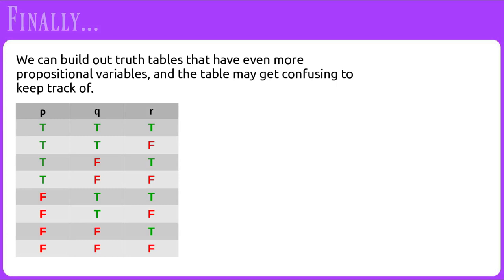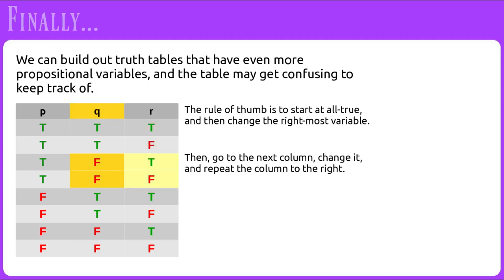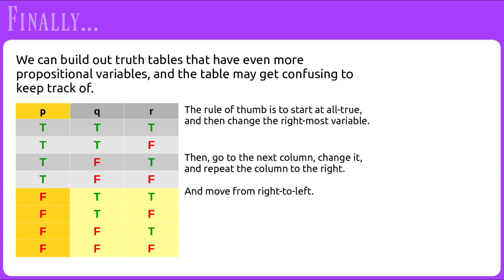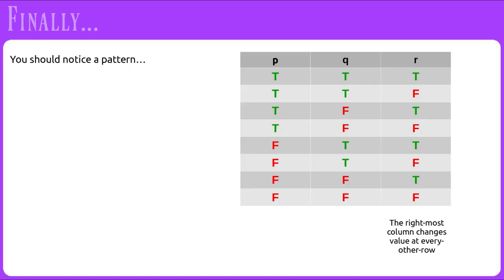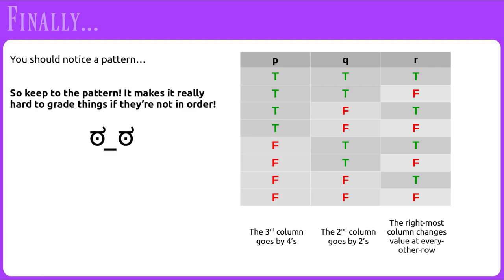Finally, we can build truth tables with even more propositional variables. The rule of thumb is to start at all true, then change the rightmost variable. Then go to the next column, change it, and repeat the column to the right, continuing from right to left. You should notice a pattern: the rightmost column changes value at every row, the second column goes by twos, and the third column goes by fours. Keep to this pattern — it makes it hard to grade things if they're not in order.